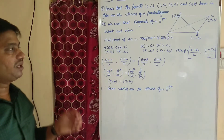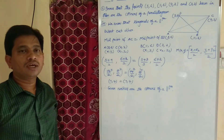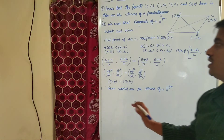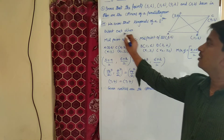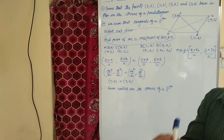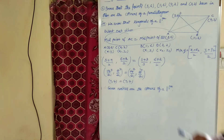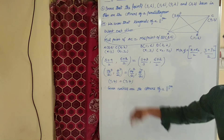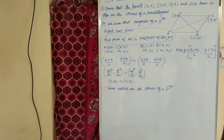If you get midpoint of AC equal to midpoint of BD, then we say that they are the vertices of a parallelogram. The two things you need to understand: first, diagonals of a parallelogram bisect each other, meaning midpoint of AC equals midpoint of BD. Second, apply the midpoint formula — X1 plus X2 by 2, comma, Y1 plus Y2 by 2 — and both should be equal. Then we can say they are the vertices of a parallelogram.